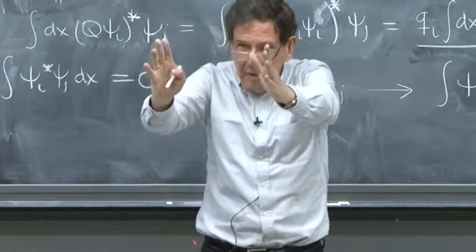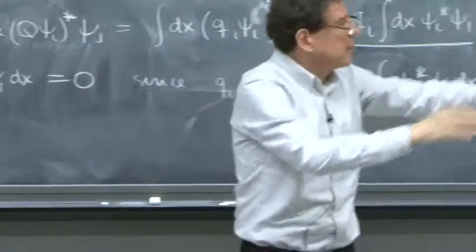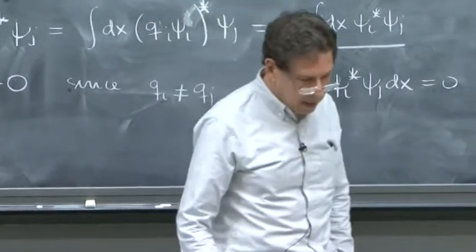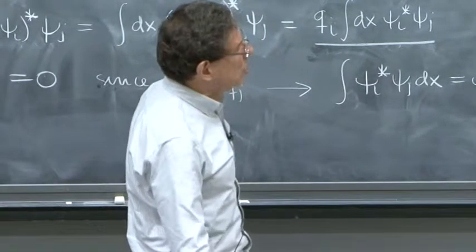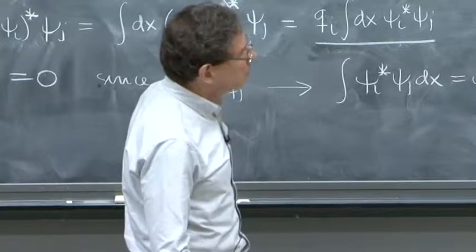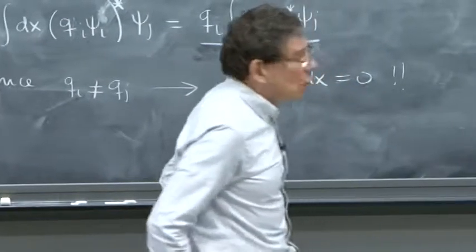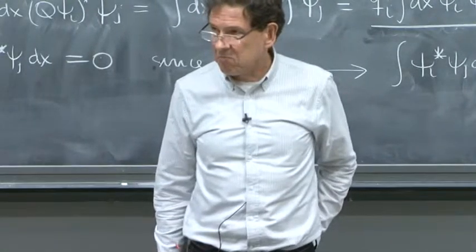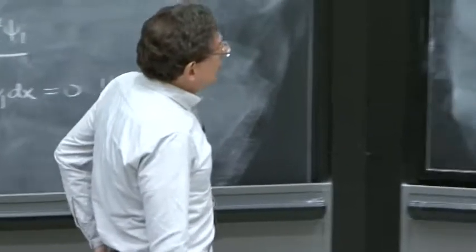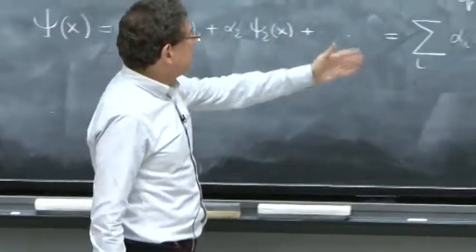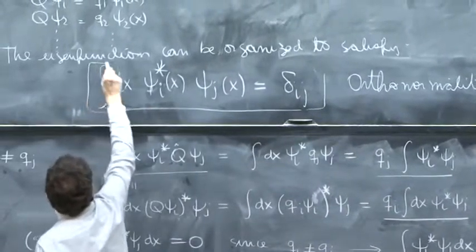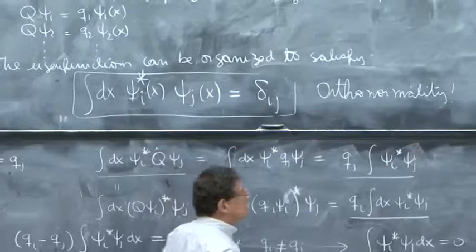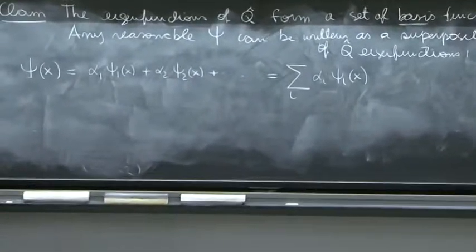So any wave function that you have, you can write it in a superposition of those eigenfunctions of the Hermitian operator. And there are two things to say here. One is that how would you calculate those alpha i's? Well, actually, if you assume this equation, the calculation of alpha i's is simple because of this property. You're supposed to know the eigenfunctions. You must have done the work to calculate the eigenfunctions. So here is what you can do.